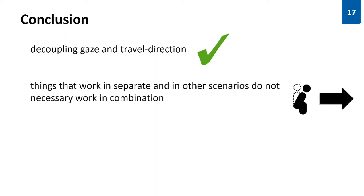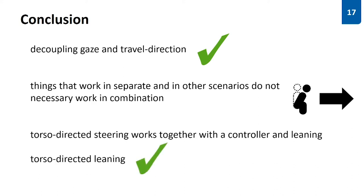So, let's finally sum up what we found. First, yes, the ability of freely looking around in VR next to being more realistic can also be helpful. Second, things that work in separate and in other scenarios do not necessarily work in combination. The best example is pointer directed leaning. Torso directed steering works together with a controller and leaning. Together with leaning it forms up a nice package that feels good.